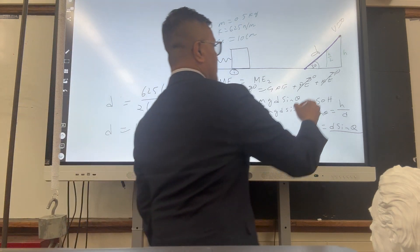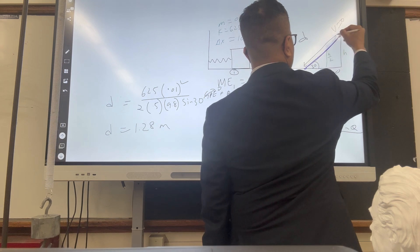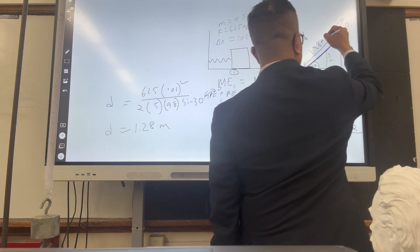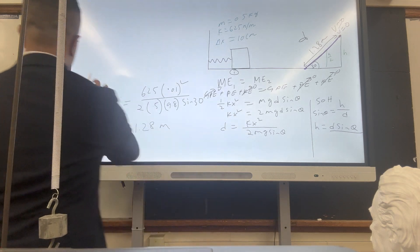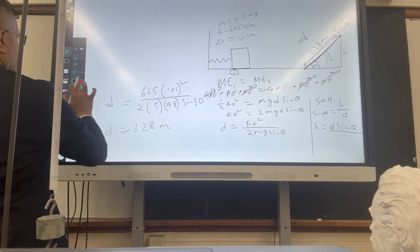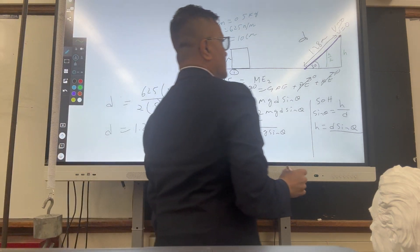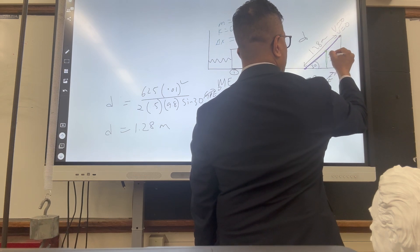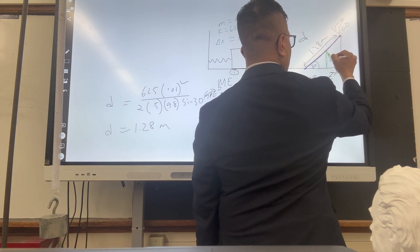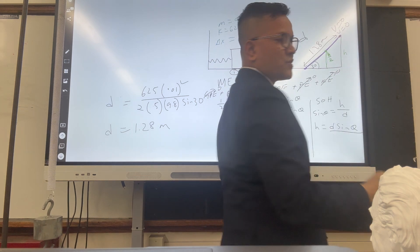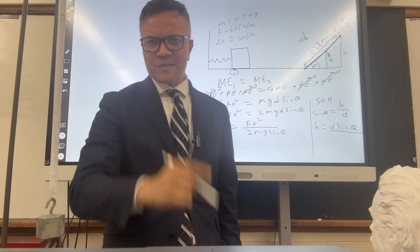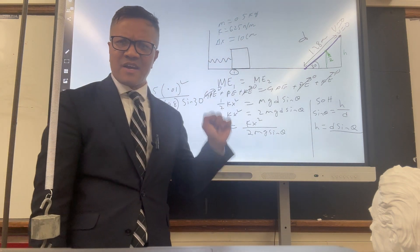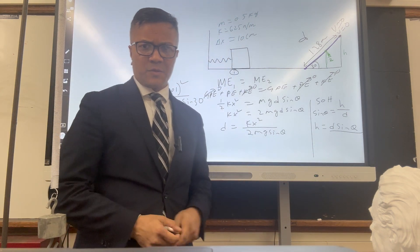Plugging in the values: D equals (80 times 0.01 squared) divided by (2 times 0.5 times 9.8 times sine 30 degrees), giving D equal to 1.28 meters. So from the spring to where velocity is 0, the distance is 1.28 meters. Tomorrow in the quiz, I'm going to ask you to find the velocity when the height is H over 2. See you tomorrow.